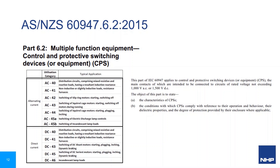CPS devices are defined in IEC 60947 part 6.2. These are devices which have one set of contacts used for control switching functions, but are also used to open upon over-current protection commands — i.e., they are a combination contactor and circuit breaker. The utilisation categories are similar to the functions assigned to electromechanical contactors.